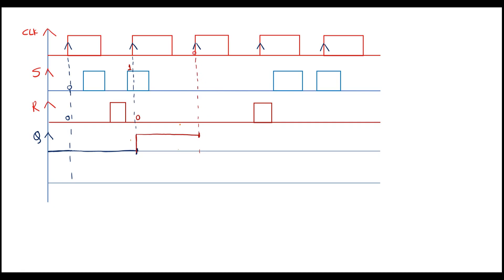At the next clock edge, S is 0 and R is 0. When both are 0, there is no change — the flip-flop carries the same previous output and remains high. At the following clock edge, S is 0 and R is 1. When S is 0 and R is 1, the flip-flop will reset — the output goes to 0 and remains 0 until the next clock pulse.